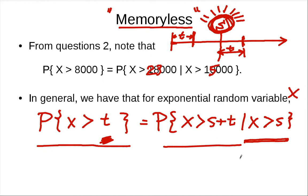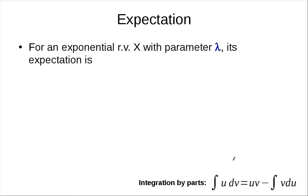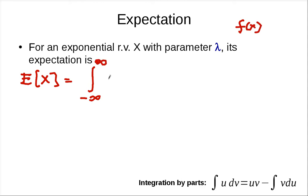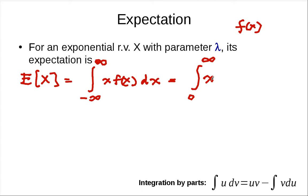Now let's talk about its expectation. We want to compute the expected value of an exponential random variable x. By definition, E[x] is the integral from 0 to infinity of x times f(x) dx — since f(x) is 0 for negative x. The PDF is lambda times e to the minus lambda x, so E[x] equals the integral from 0 to infinity of x times lambda e to the minus lambda x dx.